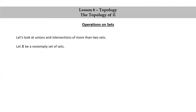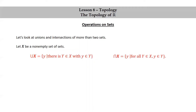Let X be a non-empty set of sets. We define union X to be the set of little y such that there is big Y in X with little y in big Y, and intersection X to be the set of little y such that for all big Y in X, little y is in big Y.